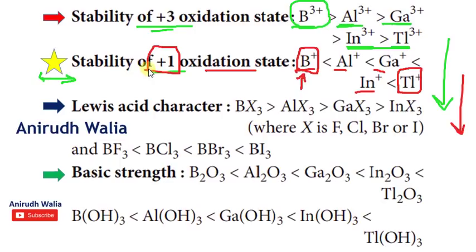There is a very high chance you will get one question from these two points in your board examination. If asked why the stability of plus one oxidation states of the boron family increases from top to bottom, or why plus three decreases, you just need to write: it is due to the inert pair effect.